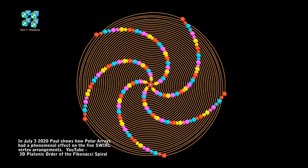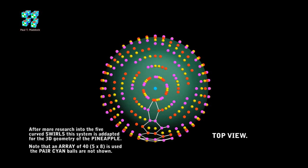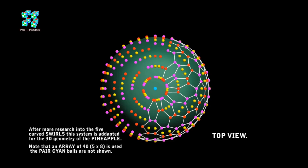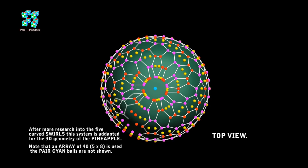Now, I did a little bit more research with this system, and I started working on the pineapple. Look at this pineapple. Look at the geometry. One of them curves are given an array of 40. So, we're really looking at 40 curved swirls. Now, five into 40 goes eight times.